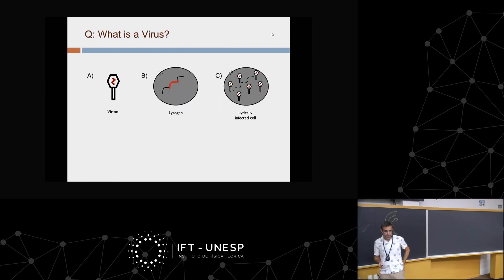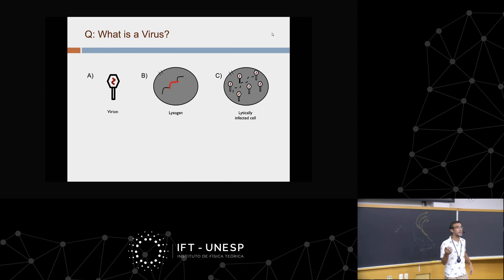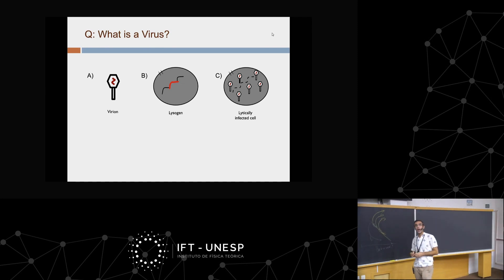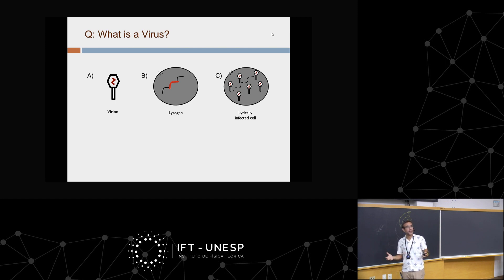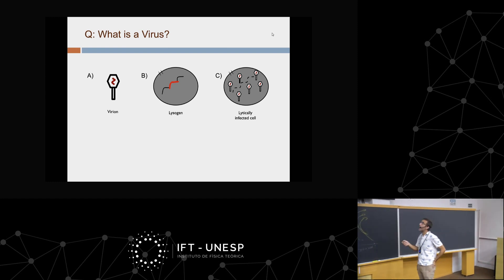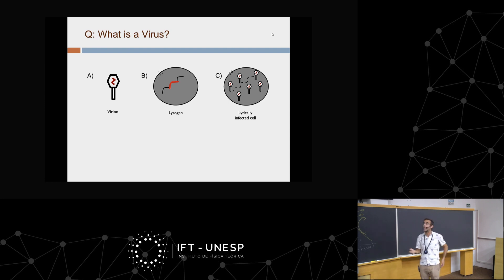To wrap up: what is a virus? Before this talk, you'd probably imagine a capsid particle. But if I ask you to imagine a chicken, maybe you should think of the egg; if a tree, maybe the seed. Similarly, if we want to think about virus impacts we have to consider not just the charismatic virus particle, but also lysogens — which don't look like viruses at all — and lytically infected cells, sometimes called viral cells. These are all critically important life cycle stages.